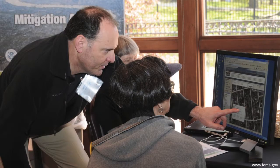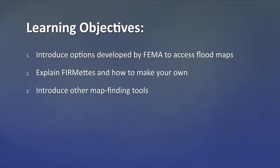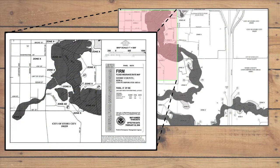In this video, we will show you several ways you can access flood maps to learn about flood hazards in your area. We will introduce you to the many options developed by FEMA for accessing flood maps, explain what FERMETs are and how to create your own FERMETs from FEMA's website, and introduce you to two other map-finding tools recently created by private companies. In the process, we'll be providing you with instructions on how you can locate a specific property using these tools.